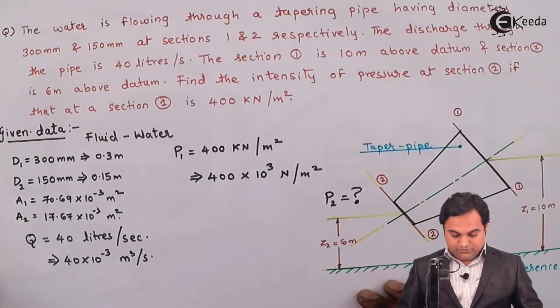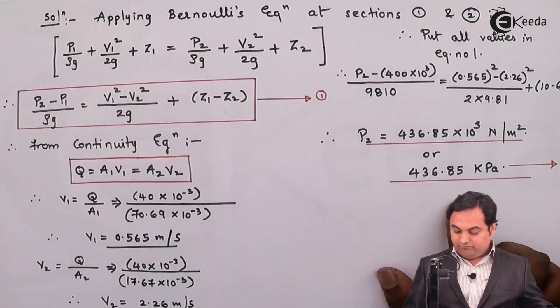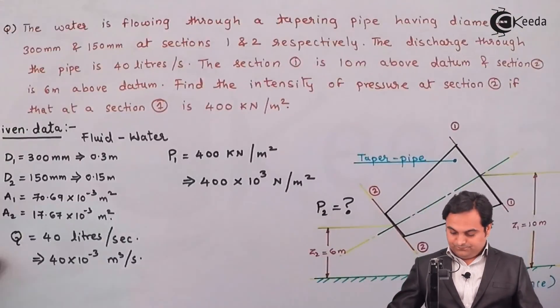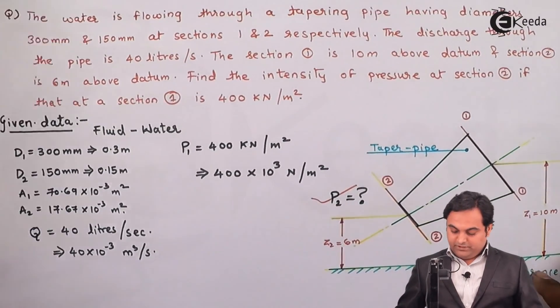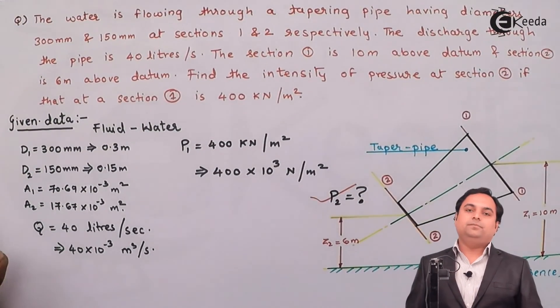So here if you see the question, they have told us to find the value of P2 and the value of P2 is known, which is 436.85 kilopascal. And with this the problem gets completed.